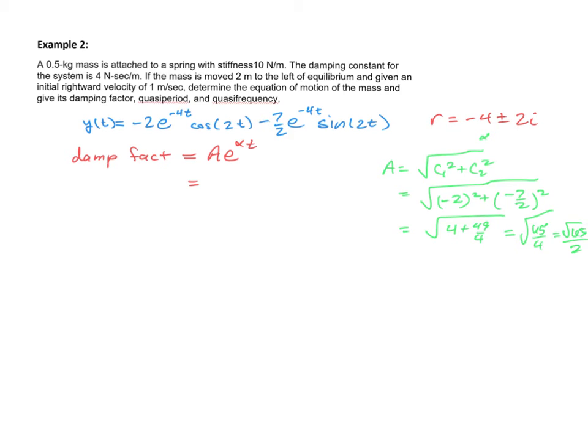Going back to our formula, that's going to be the square root of 65 over 2 times e to the negative 4t.